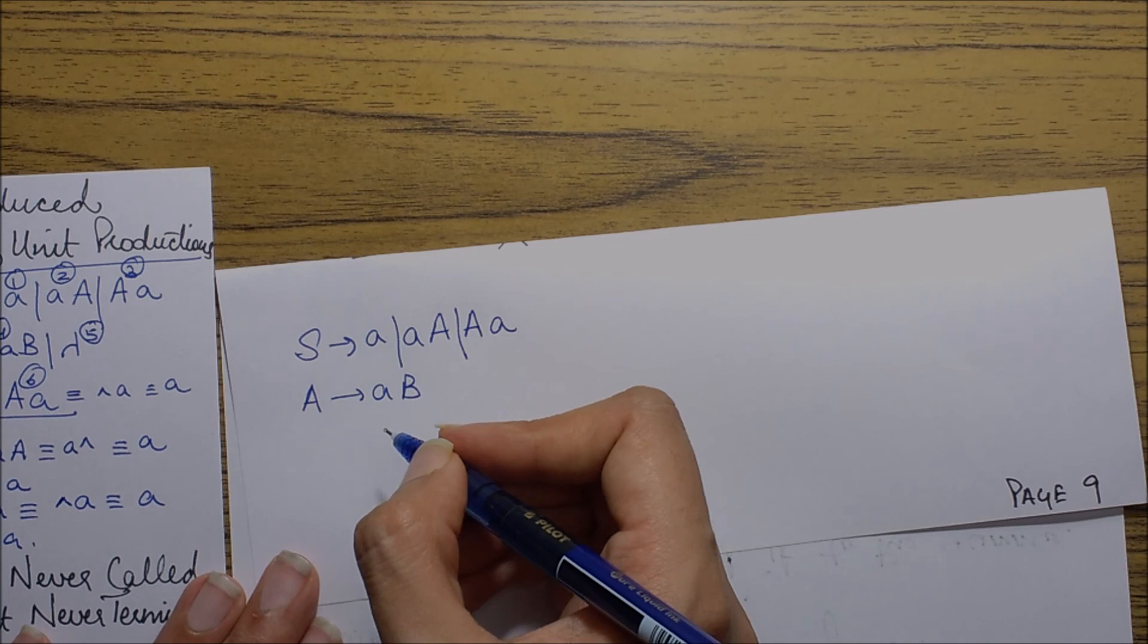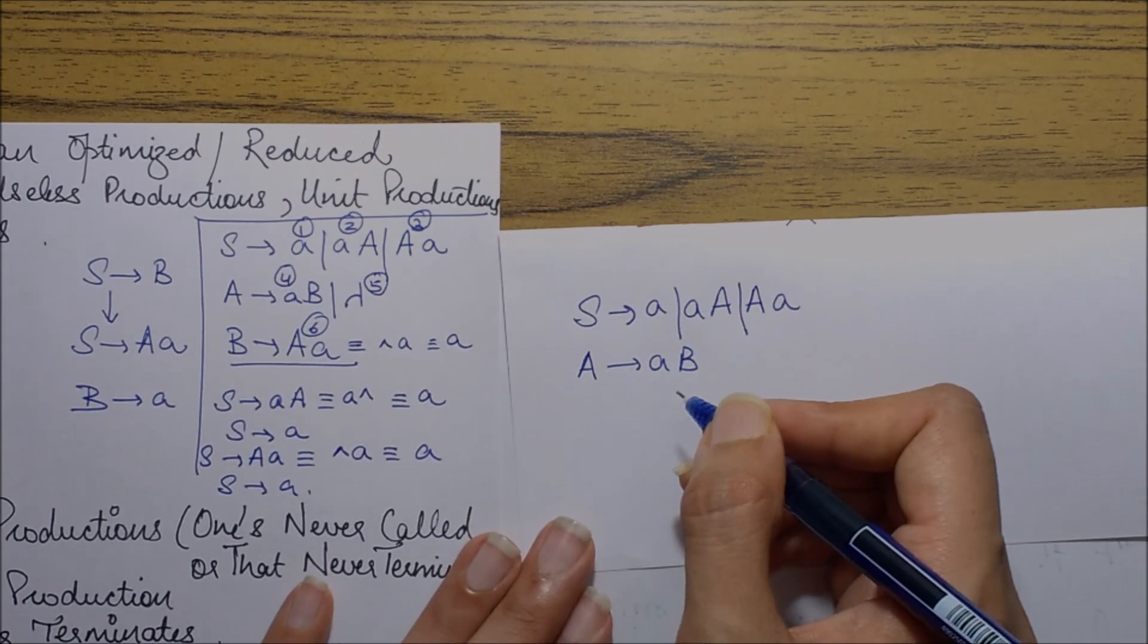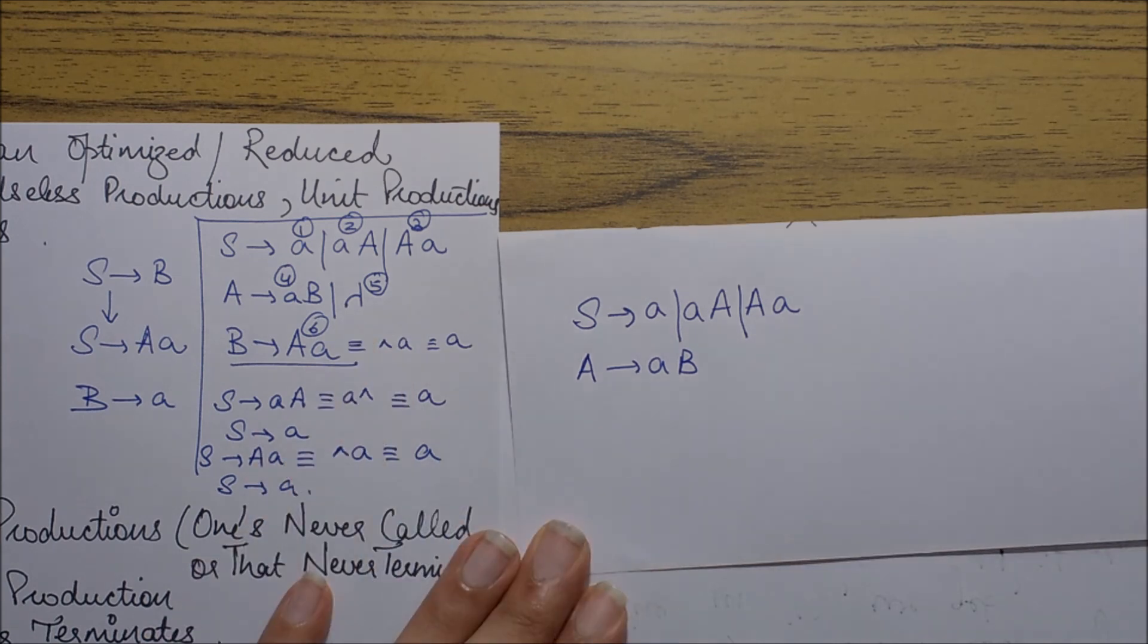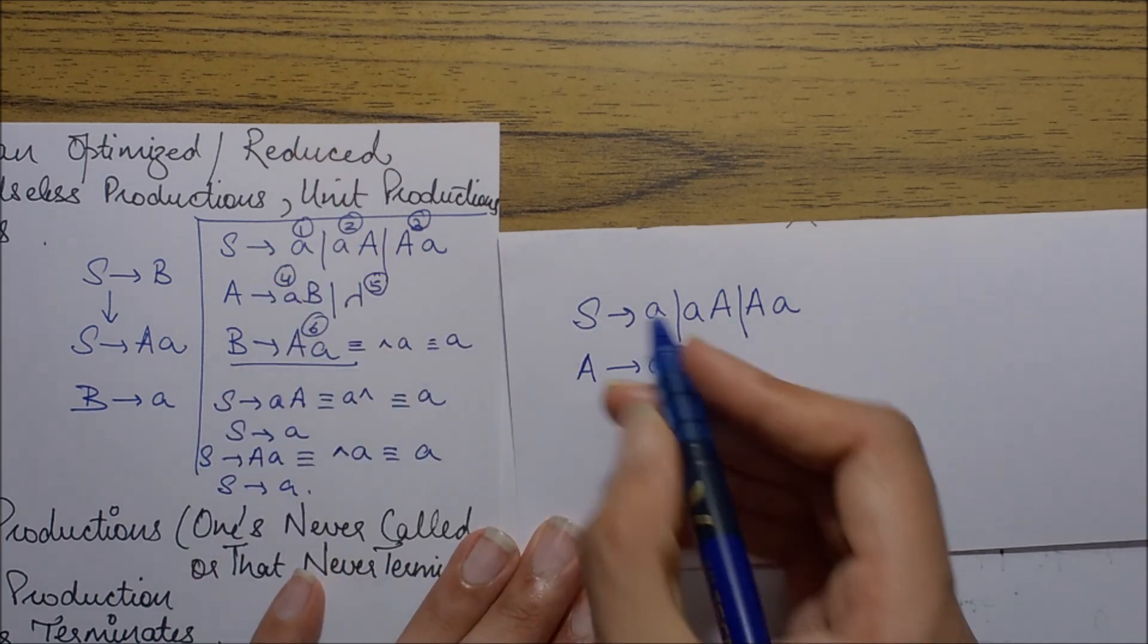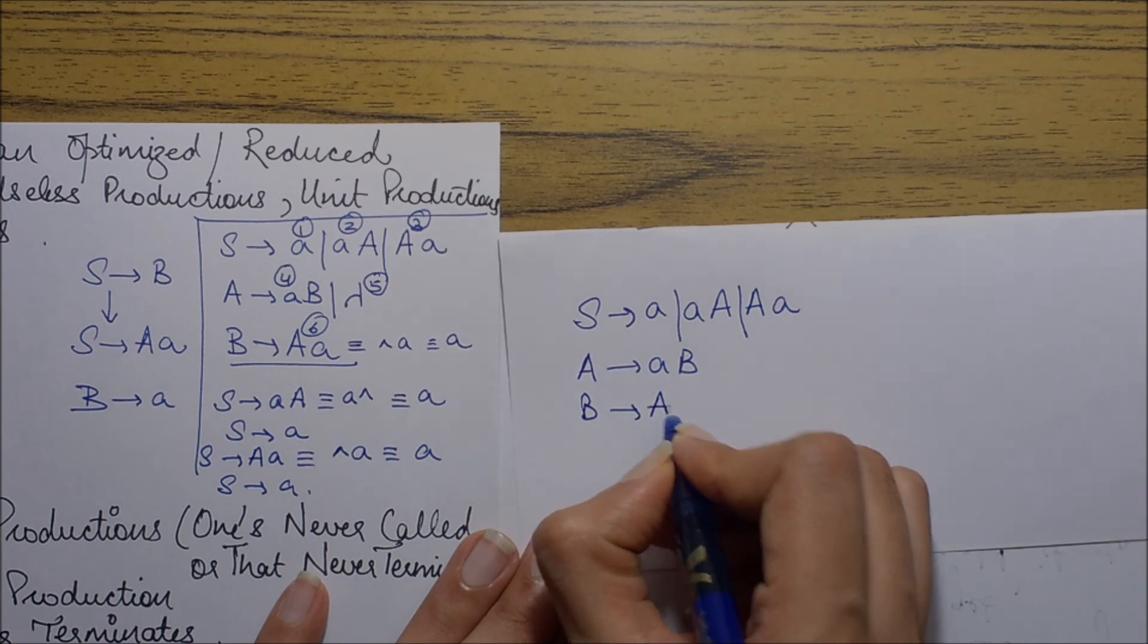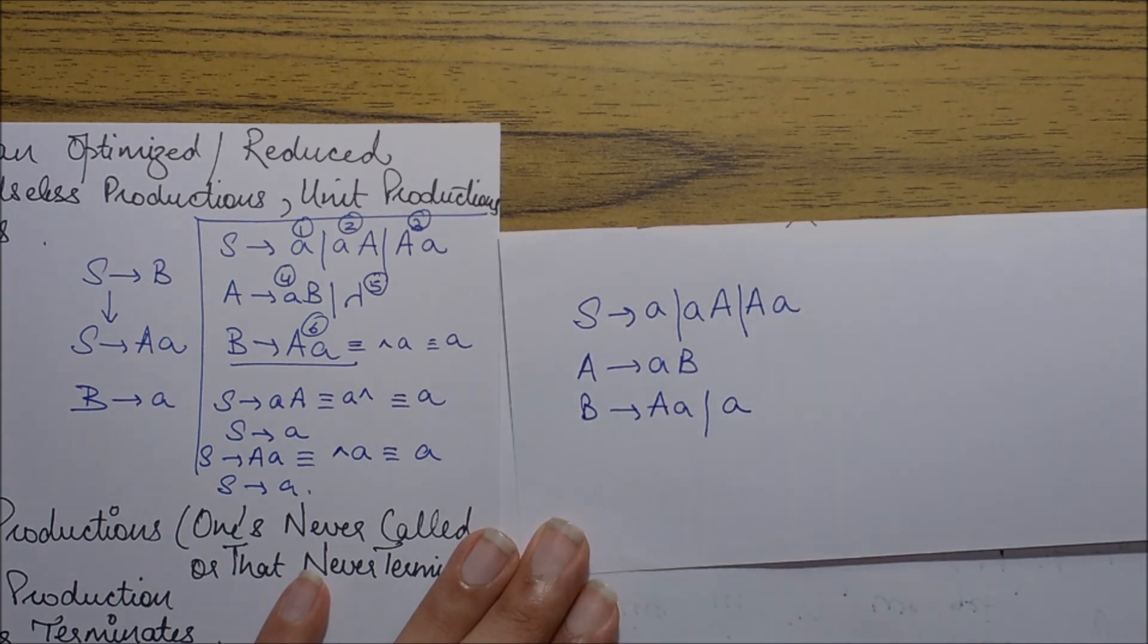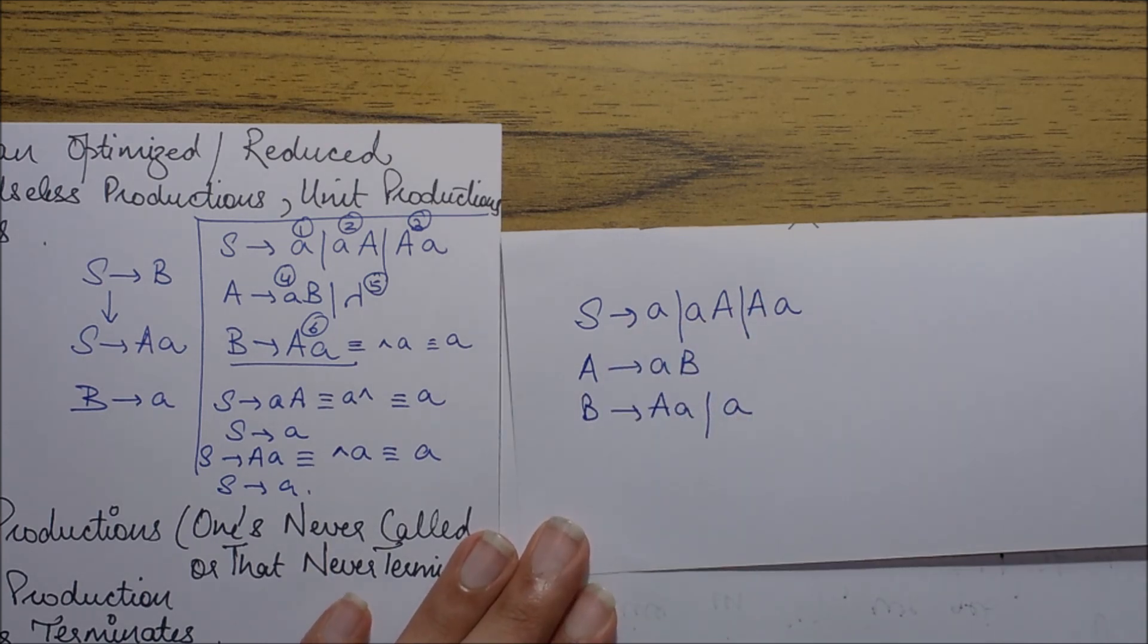Now since we have removed the null production, I do not need to write this A goes to null so this is removed. Then B goes to AA and also we obtain B goes to small a from here so this is written. So this is the final set of productions that we get after optimization of our grammar.